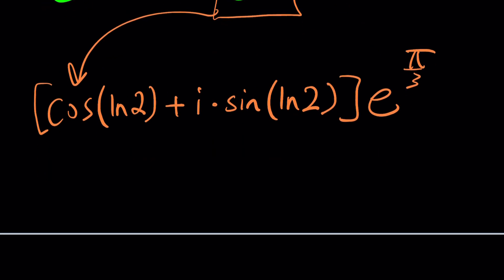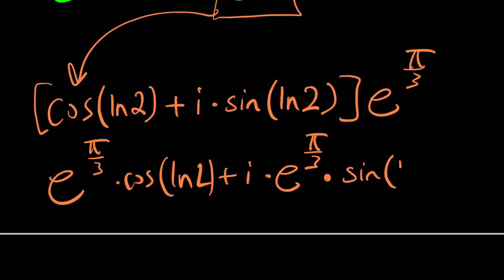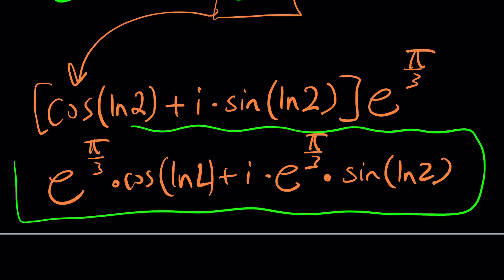Now you can distribute it if you want and write it as e to the power pi over 3 times cosine of ln 2 plus i times sine of ln 2. You can basically write this as follows. What is e to the power pi over 3? That's an irrational number probably transcendental but use a calculator and guess what happens at the end you're able to write this as a plus bi which is by the way the name of this channel and this brings us to the end of this video.